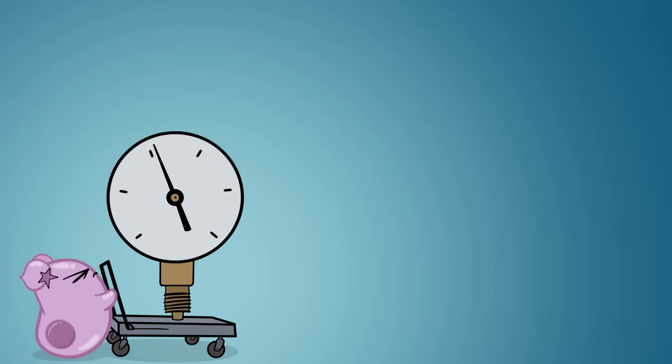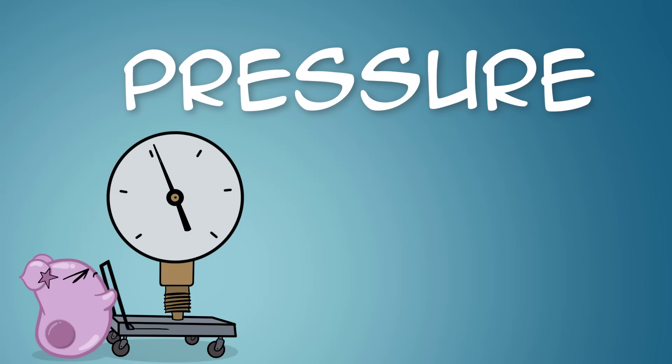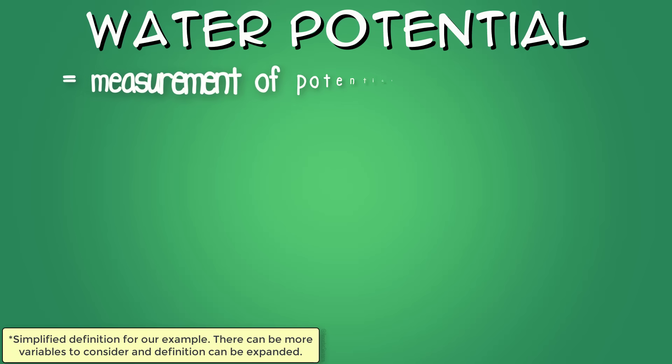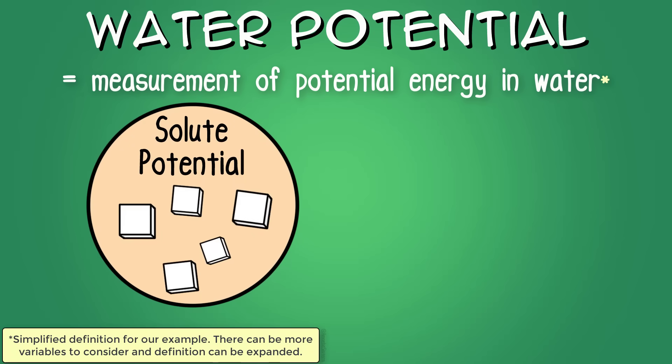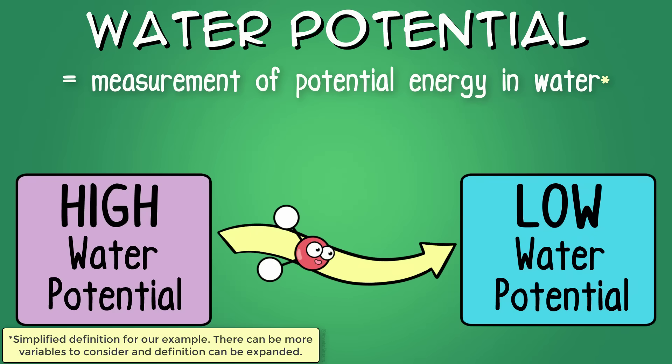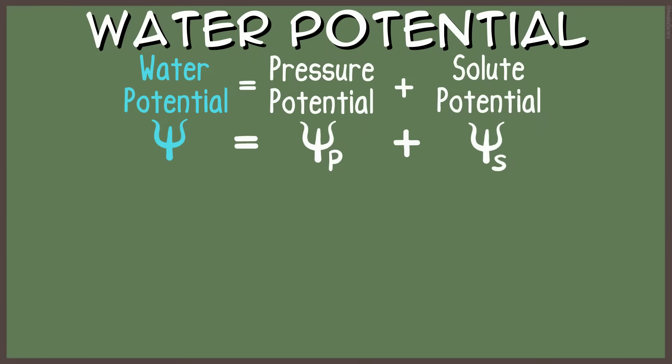So let's bring in another variable that can influence osmosis. Pressure potential. This is when it's very useful to understand how one can calculate water potential. Water potential considers both solute potential and pressure potential. In osmosis, water travels to areas of lower water potential. So the formula is water potential is equal to the pressure potential plus the solute potential.